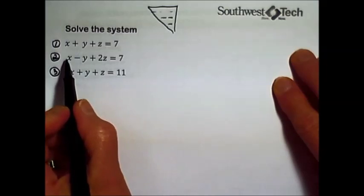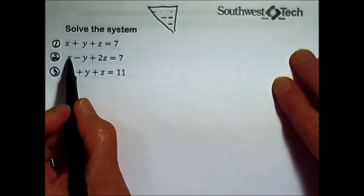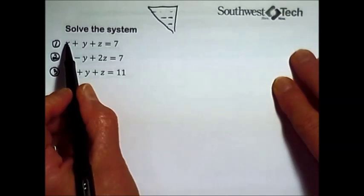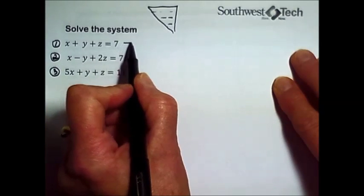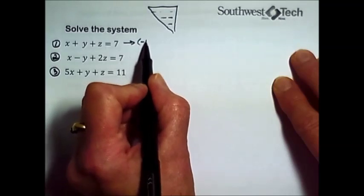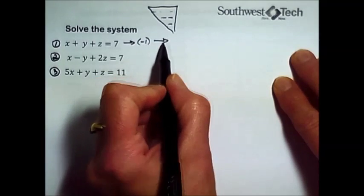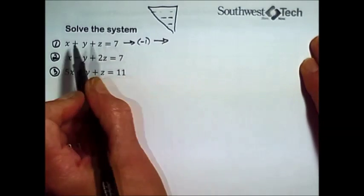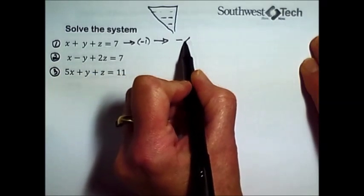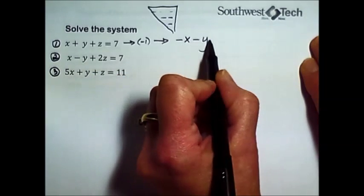My goal is to eliminate this leading term in the second equation. To do that, one option would be to multiply this first equation, every term, by a negative one. The result will change every one of those signs to the opposite of what we have.